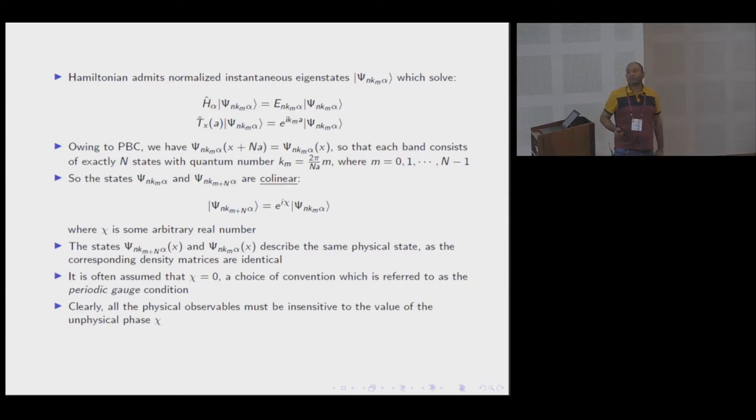The vector potential does not affect the periodicity of the potential. The lattice potential is still intact. We still get instantaneous eigenkets which are Bloch states, now functions of α. α is linearly dependent on time and they obey the Bloch theorem. In a band, n is the band index, km is the wave vector, α is the parameter related to flux. You have n states in a given band, all linearly independent.